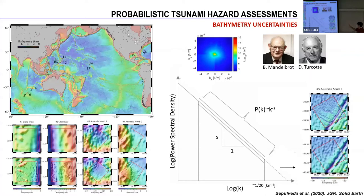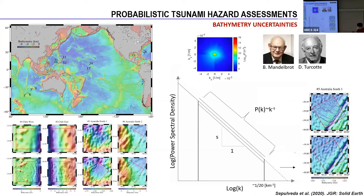That fractal behavior is a very strong concept that allows us to know something about what is going on at very high wave number content, which we commonly cannot capture with our measurement technologies. One of the best examples of this problem of getting high wave number content is the way we measure bathymetry. Right now, today, we have only mapped 11% of the oceans with ships. Only 11% of the ocean surface has been visited by a ship — which is very poor coverage.